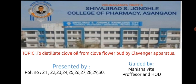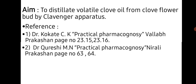We are performing the practical of subject Pharmacognosia and Phytochemistry second year, and our topic is to distillate clove oil from clove flower bud by Clevenger Apparatus, under the guidance of Vite Ma'am, Professor and H.O.D. of our college. The aim is to distillate volatile clove oil from clove flower bud by Clevenger Apparatus.